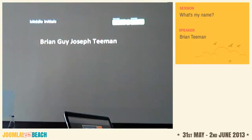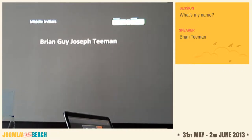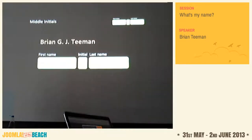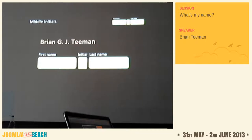My name is Brian Guy Joseph Tiemann — that's what my parents gave me. Brian is my given name, Guy and Joseph are my extra given names, and Tiemann is my family name. I sometimes write it as Brian G.J. Tiemann. I regularly get forms with first name, initial, last name — so on my bank I'm Brian G. Tiemann. But on my passport I'm Brian Guy Joseph Tiemann. That mismatch can cause problems when I need to prove my identity.